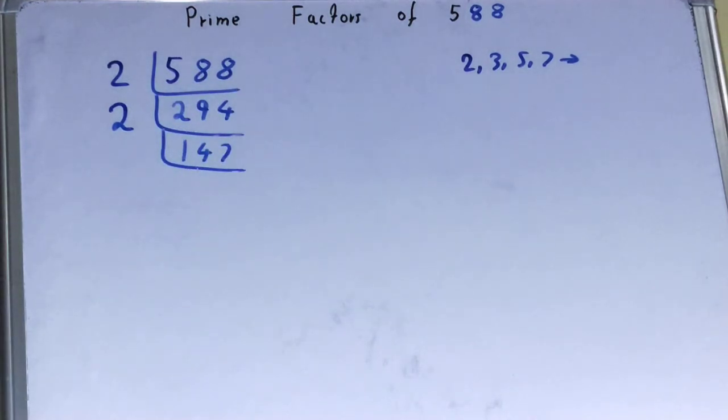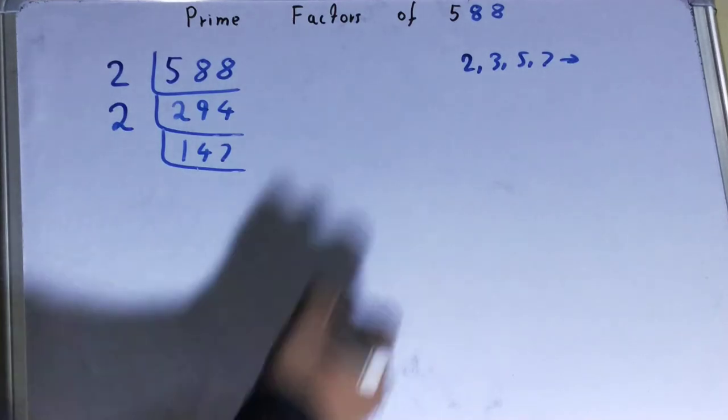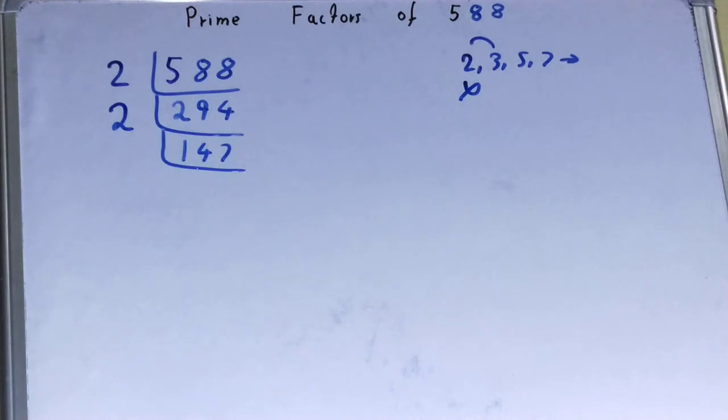Now is this 147 further divisible by 2? The answer is no. It is an odd number. So what we'll do? We'll go to the next lowest prime number that is 3. Is this 147 divisible by 3? Let's check.